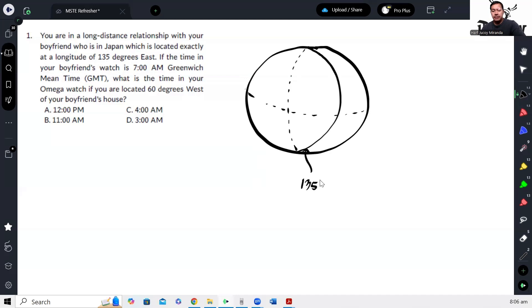And then you are located 60 degrees west of the boyfriend's house, so that means you're on the left side. So let's say this is it. Okay, your location, 60 degrees west.